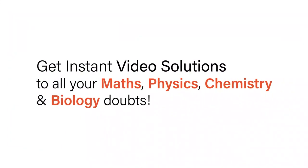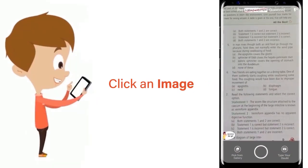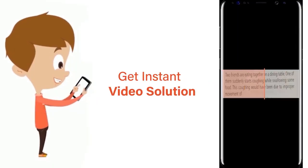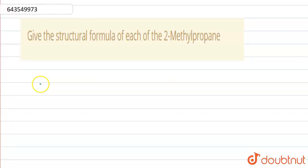With Doubtnet, get instant video solutions to all your maths, physics, chemistry, and biology doubts. Just click the image of the question, crop the question, and get instant video solution. Download Doubtnet app today. So the question is: give the structural formula of 2-methyl propane.